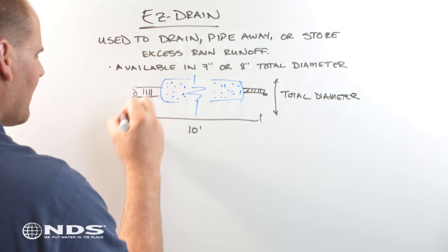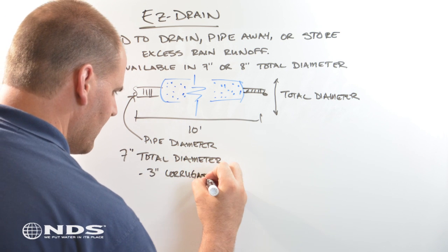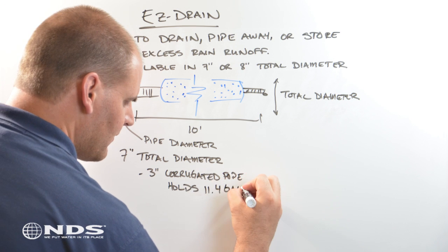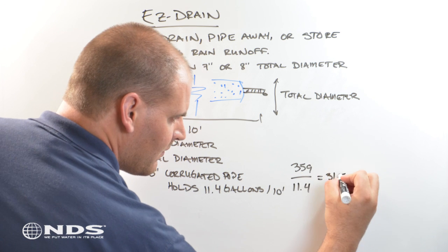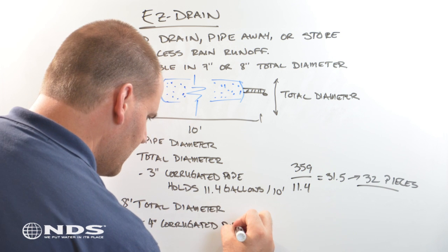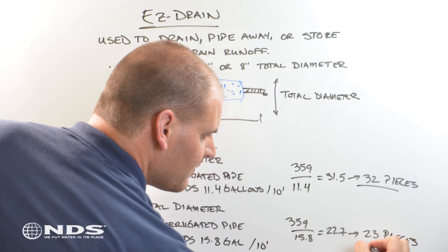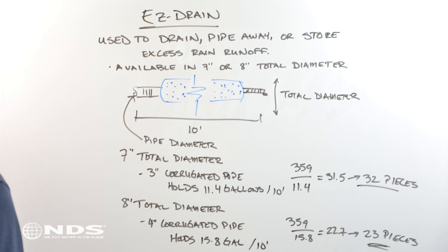The 7 inch diameter is primarily available in California and 8 inch everywhere else. The 7 inch size can hold 11.4 gallons of water per 10 foot section. If you wanted to store all 359 gallons of water using just 7 inch easy drain, you would need 32 10 foot sections.